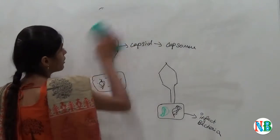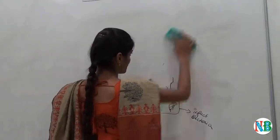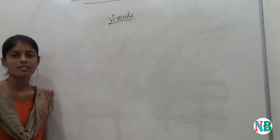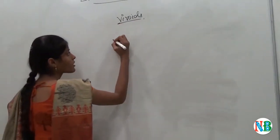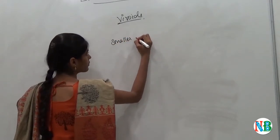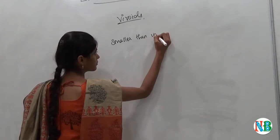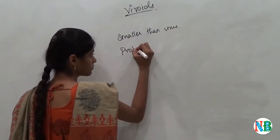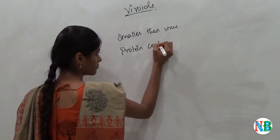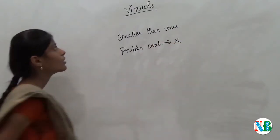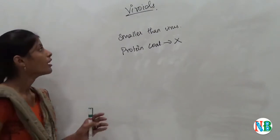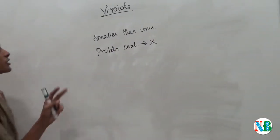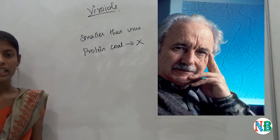Now we will see about viroids. Viroids are similar like viruses but viroids are smaller than virus and viroids also do not contain protein. Viroids also are inert outside the cell and they will multiply inside the cell. So viroids were discovered by Diener in 1971.